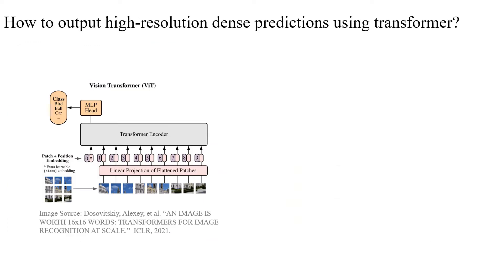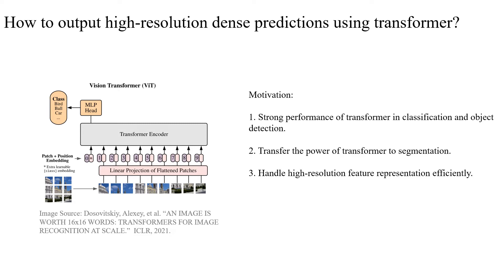Transformers, such as ViT and Swin Transformer, have been widely adopted to vision tasks due to their strong global modeling power, achieving very high accuracy in object classification and detection. However, they have quadratic complexity regarding the input token numbers.